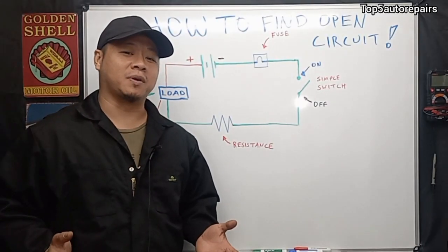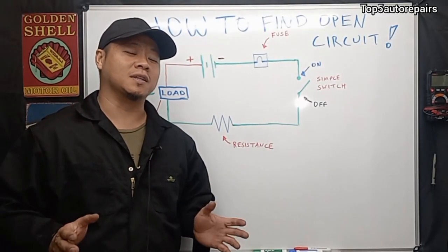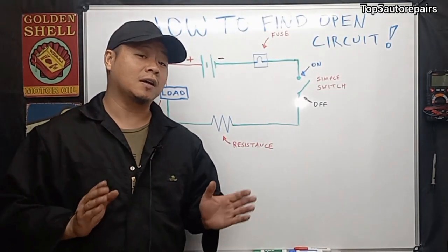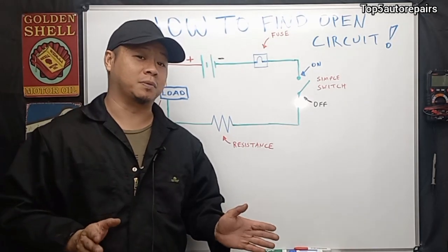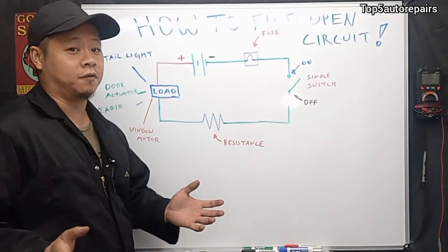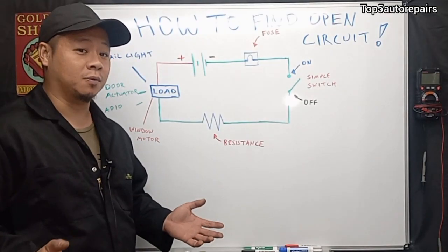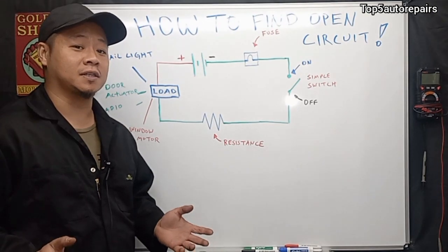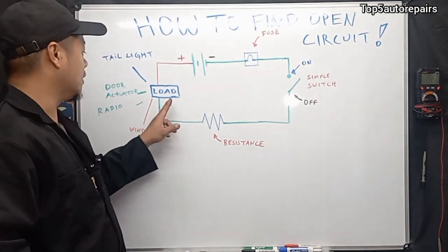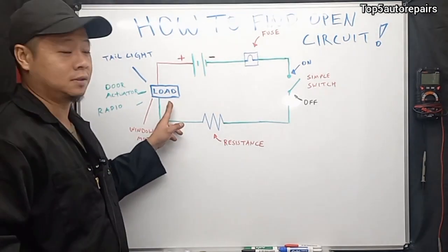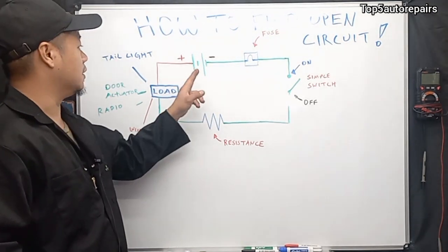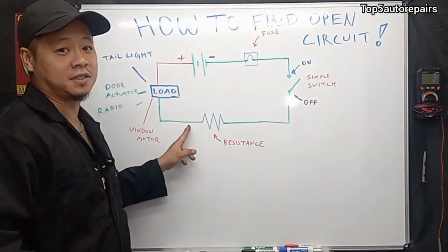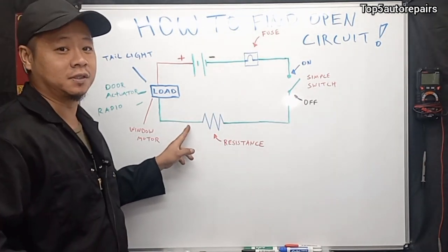Welcome back to Top 5 Water Repairs. In today's lesson, I'm going to show you guys how to find an open circuit. For a circuit to be complete, there are three things that are going to be needed: you're going to need a load, you're going to need a power source, and you're going to need some sort of conductor.